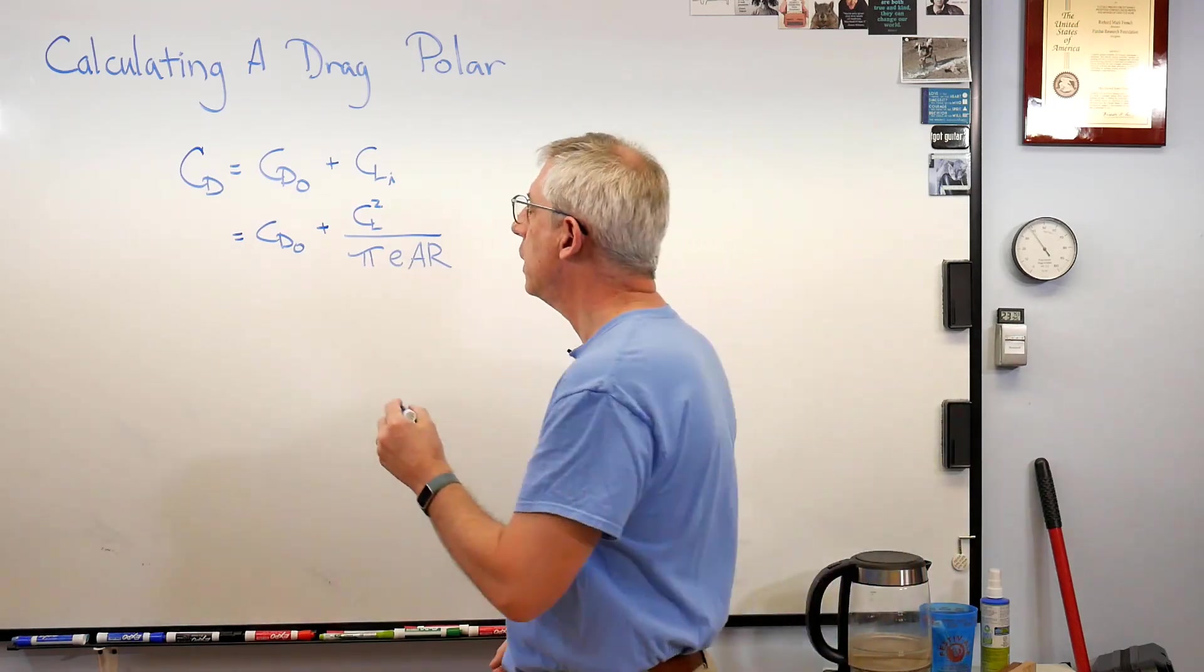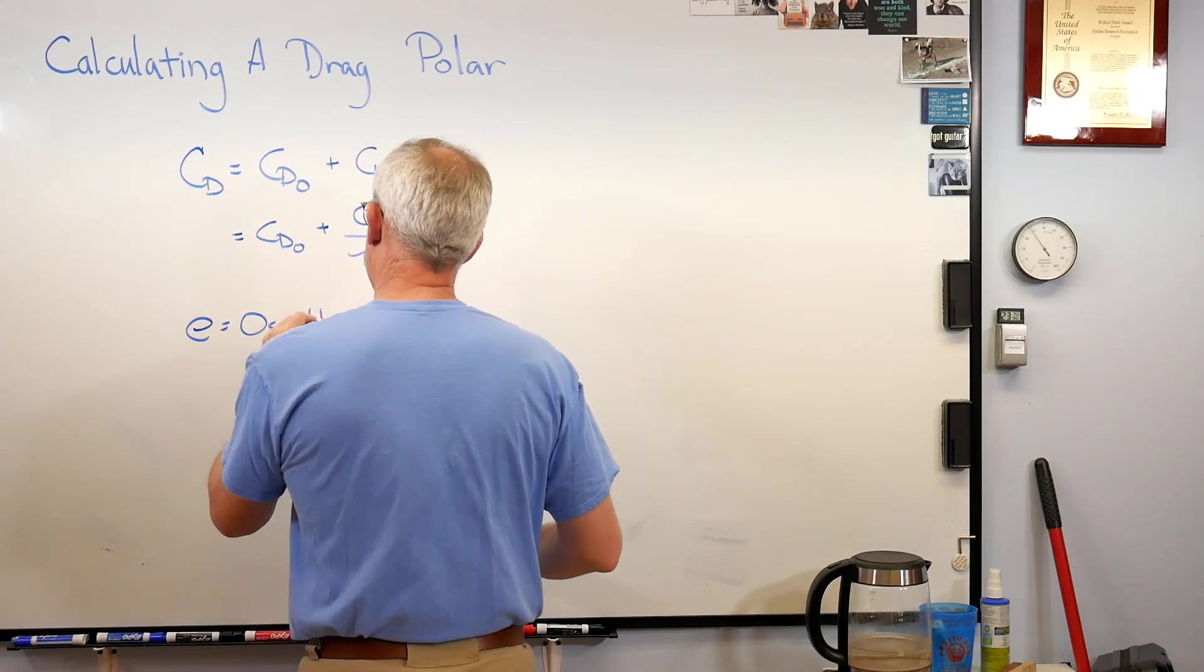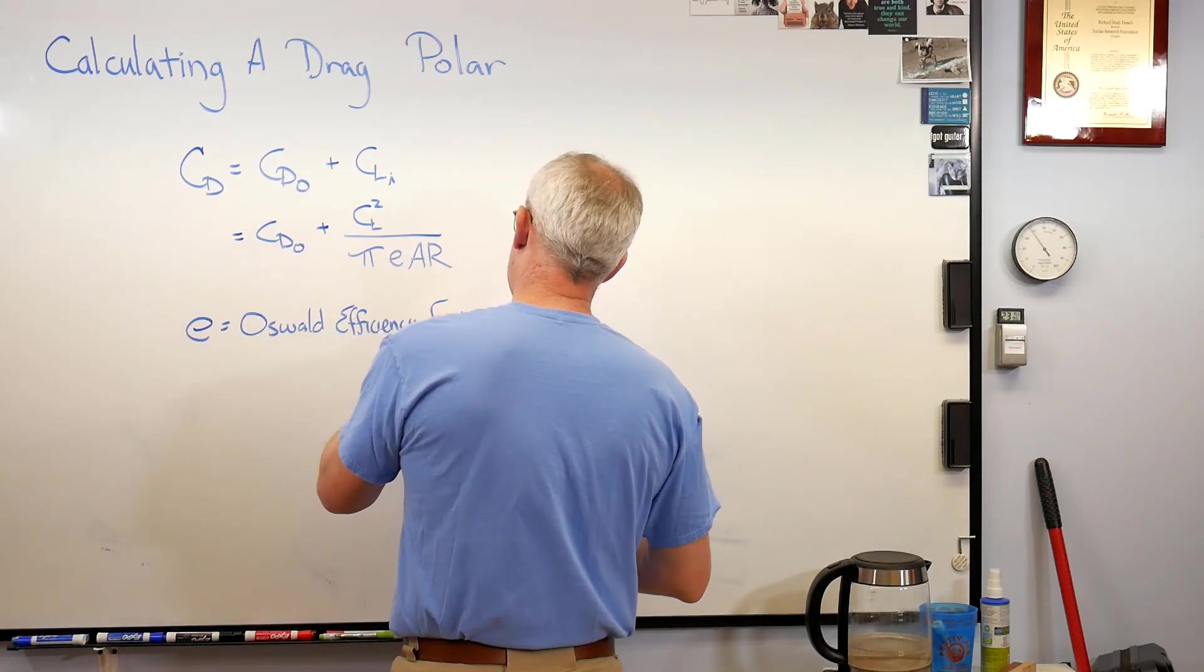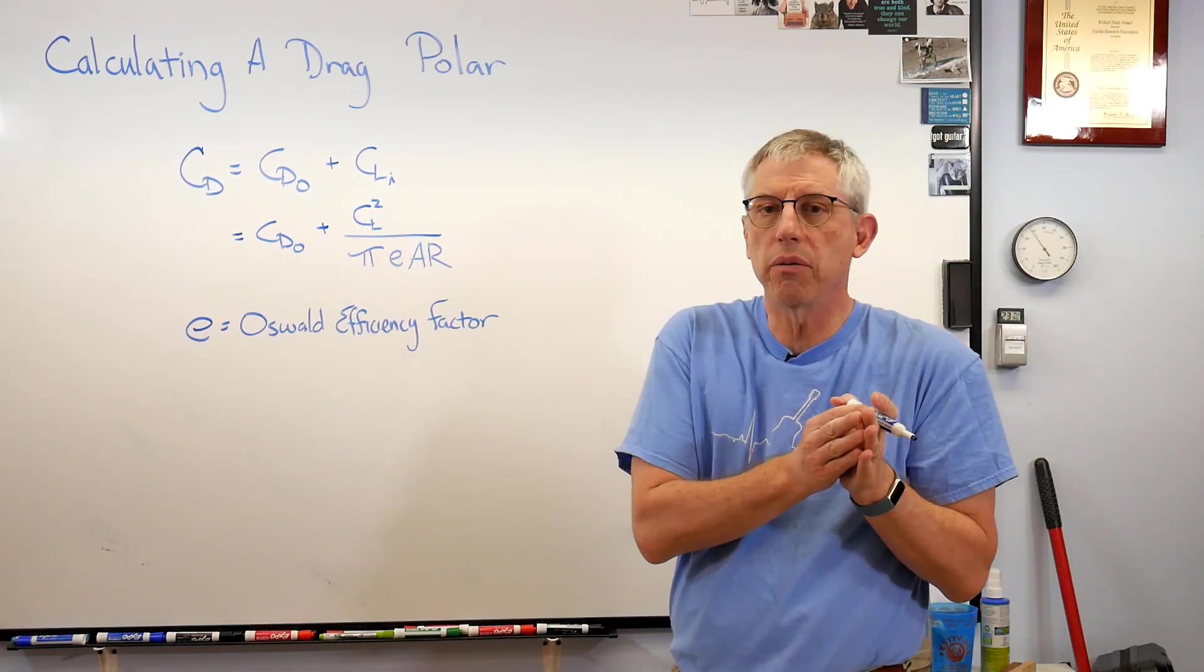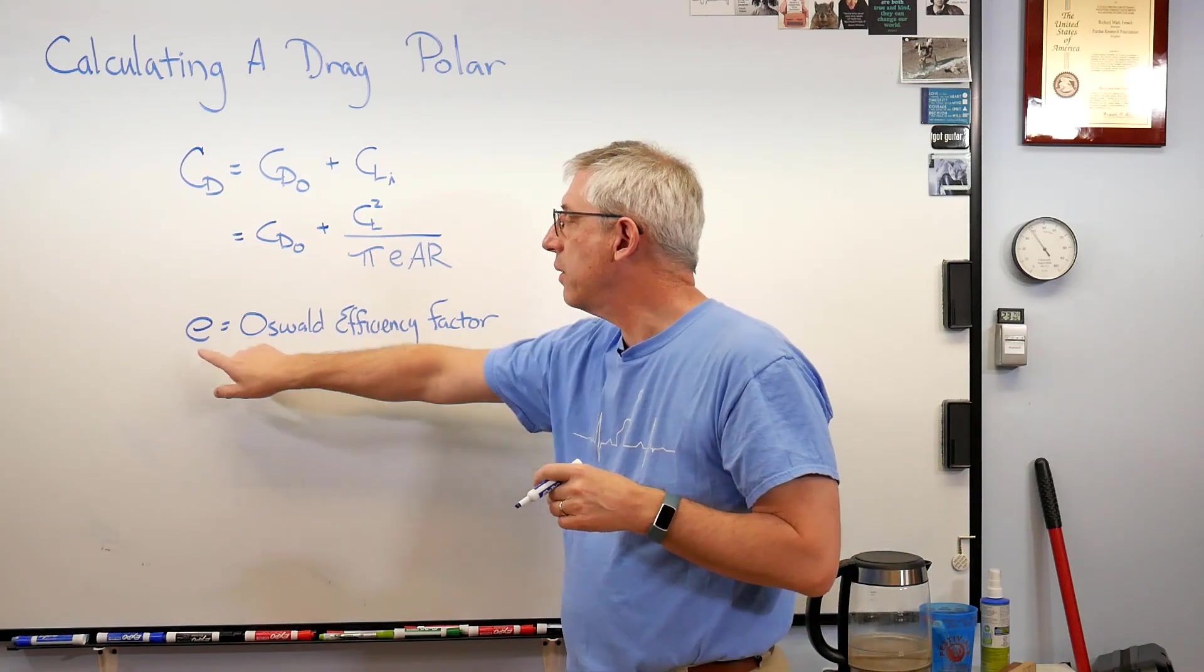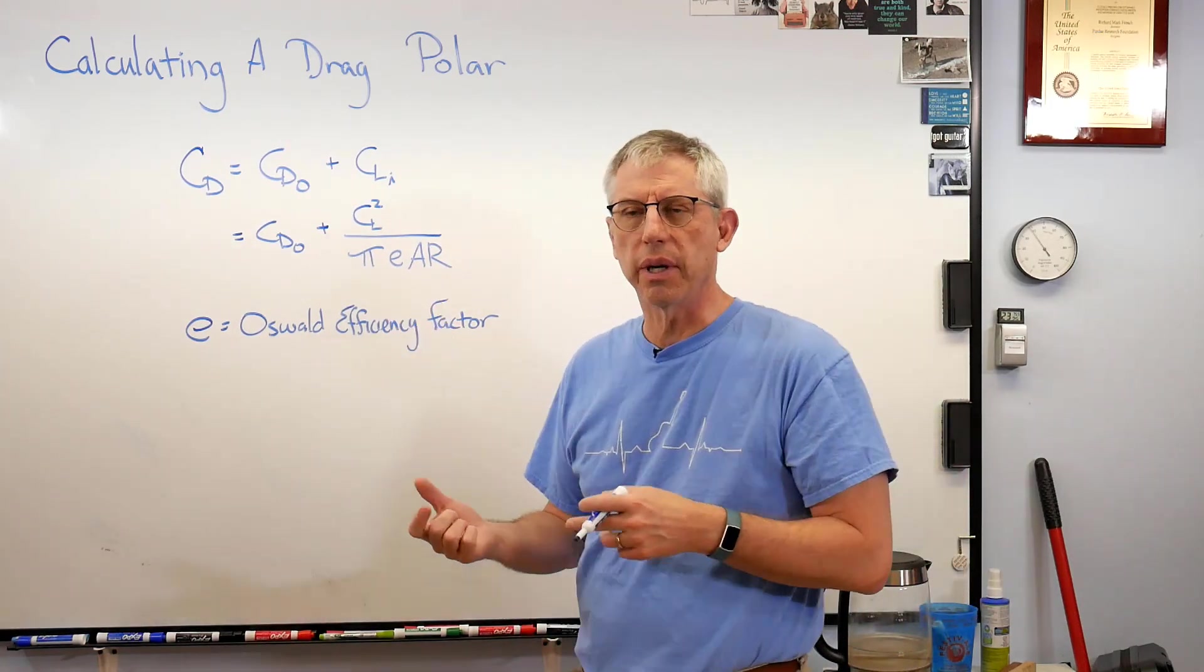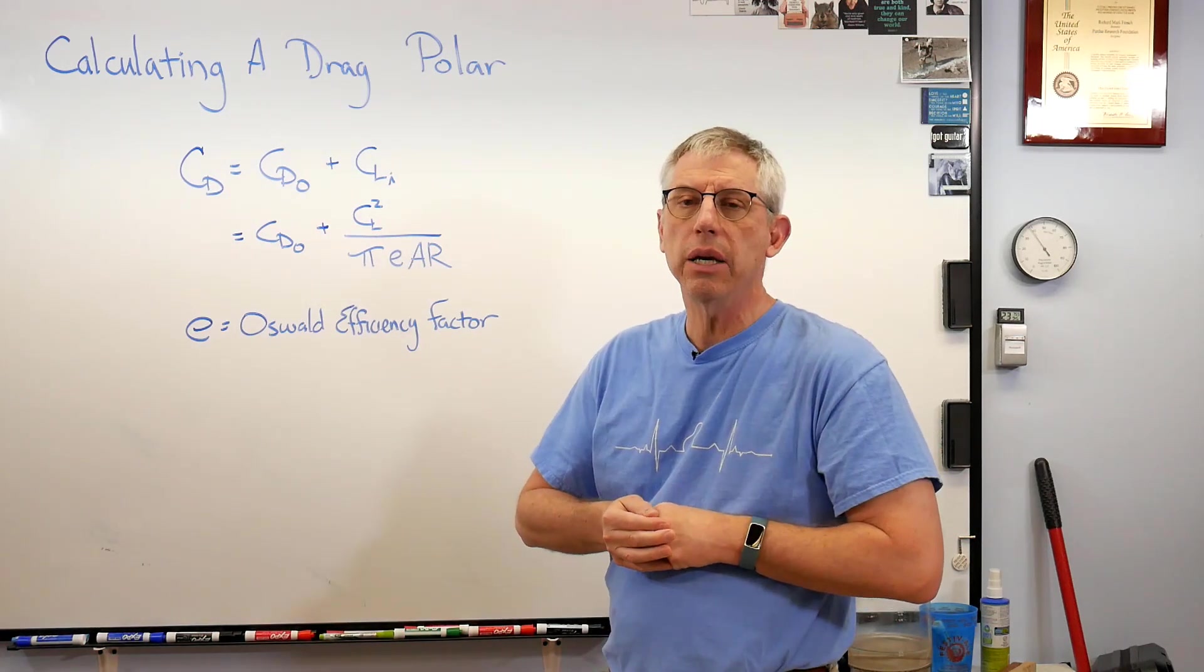There's an ideal lift distribution, that is the ideal amount of lift that's produced as you look down the span of the wing. When it's ideal, E is one. That's theoretically the most efficient you can get, or at least the most efficient you can get with a fairly simple analysis of lift. Classically E is one for an elliptical wing.